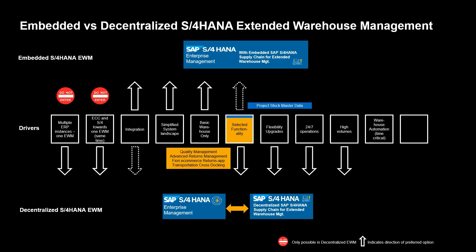Number ten. Warehouse automation comes in many shapes and forms. EWM provides an open and standardized approach for integration to a wide range of warehouse control systems. Successful operations depend among other things on factors such as network latency and the inbuilt capability of the equipment. Traditionally, warehouse automation has been a driver for the decentralized deployment of EWM.